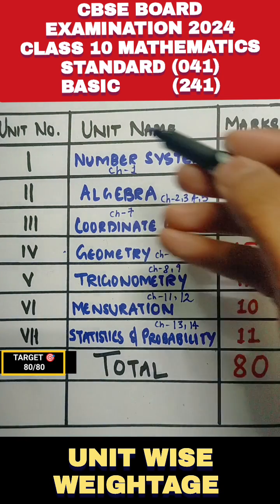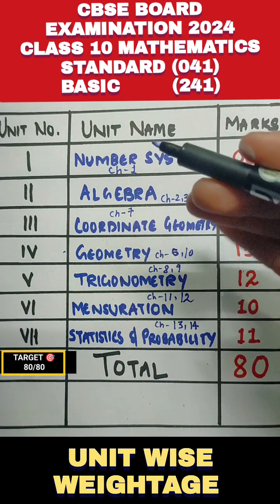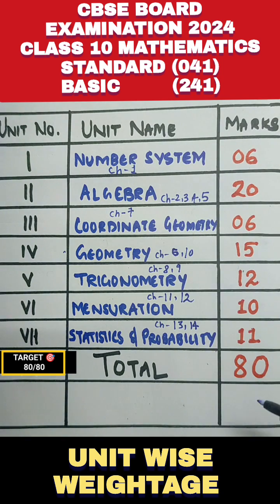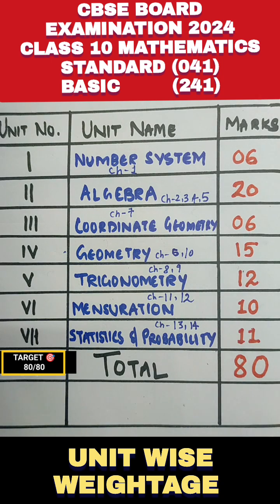So this way, you have to prepare according to the chapter-wise, or unit-wise, weightage to get 80 out of 80 in your board examination. Stay connected — in our next video we will discuss the blueprint for the Class 12 Mathematics paper and then we will also solve sample papers important for your board examination.